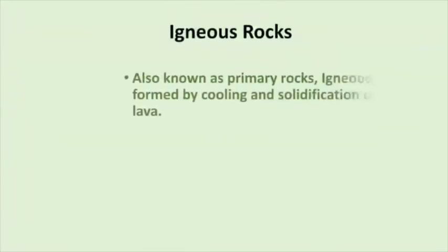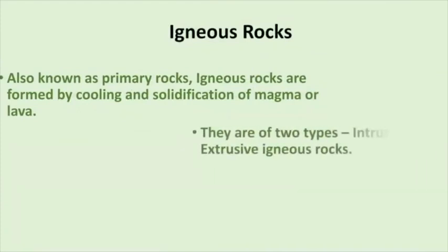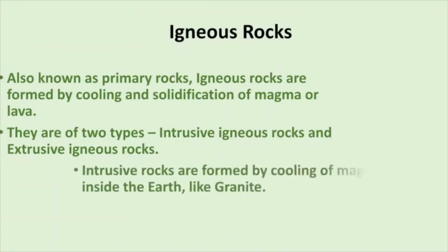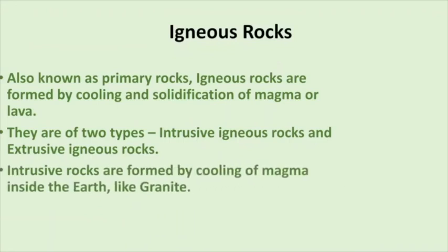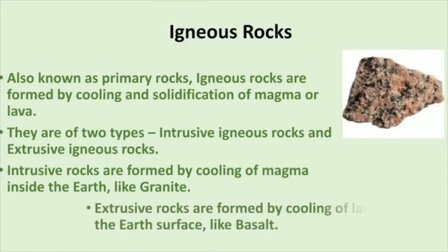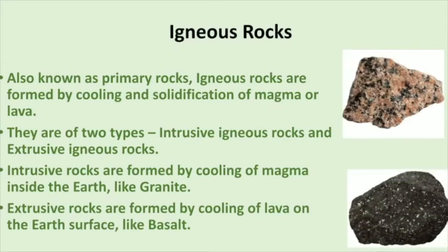Igneous rocks. These are also known as primary rocks. Igneous rocks are formed by cooling and solidification of magma or lava. They are of two types: intrusive igneous rocks and extrusive igneous rocks. Intrusive rocks are formed by cooling of magma inside the earth, like granite. On the other hand, extrusive rocks are formed by cooling of lava on the earth's surface, like basalt.